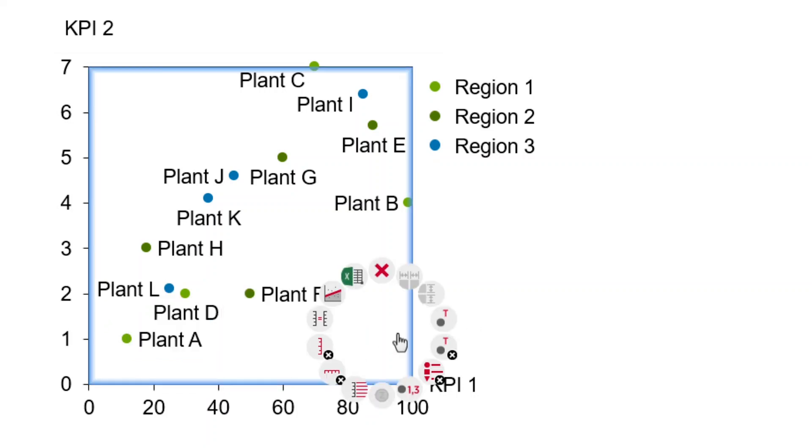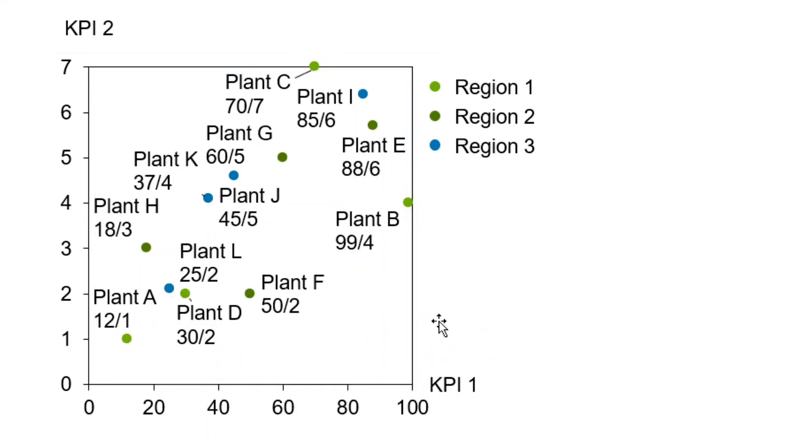The automatic labeler places labels as close to their data points as possible. If necessary, connecting lines are used to make sure that the labels don't overlap.